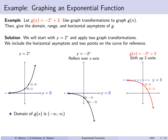The domain of this function is still all real numbers — any x value can be plugged in. The range is all y values less than 3, the interval from minus infinity to 3. We don't actually reach the horizontal asymptote, so 3 is not included in the range. The horizontal asymptote is y equals 3.